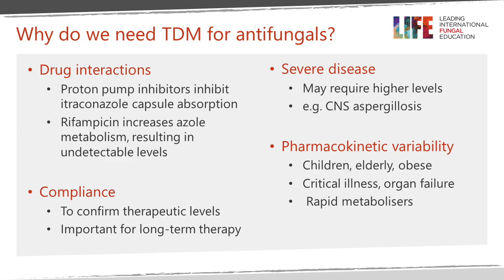In some patients, particularly those on long-term therapy, compliance with therapy is not great, and TDM is a means of checking whether patients are taking the medicine as prescribed. Severe disease may require higher levels of drug. There's also pharmacokinetic variability in children, the elderly, and obese patients, as well as those who are critically ill, have organ failure, or have certain genetic polymorphisms which increase or reduce drug metabolism, notably with voriconazole.